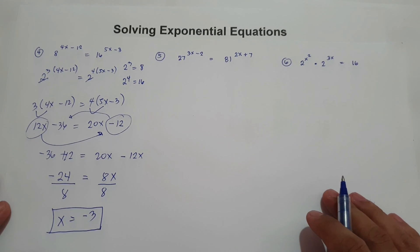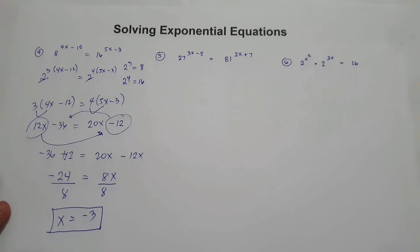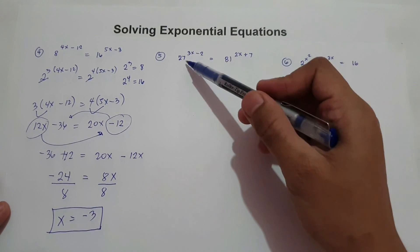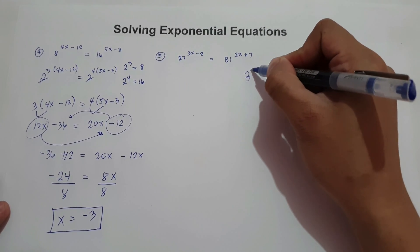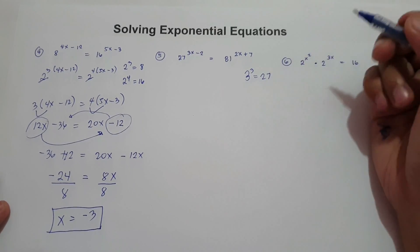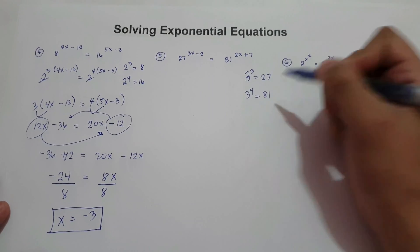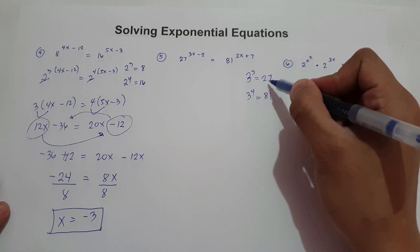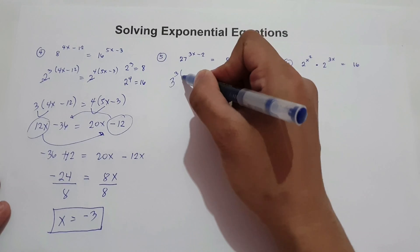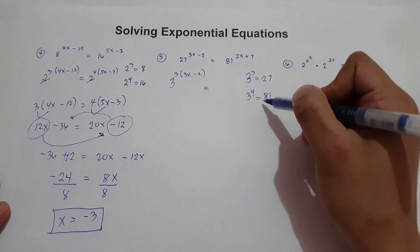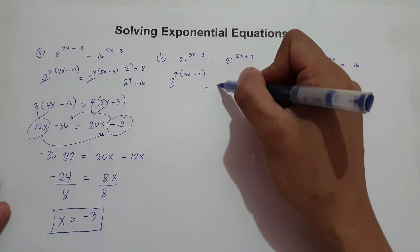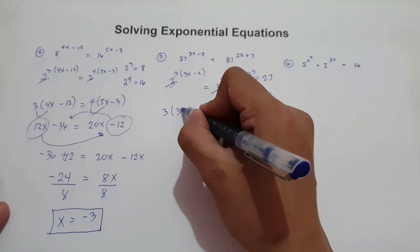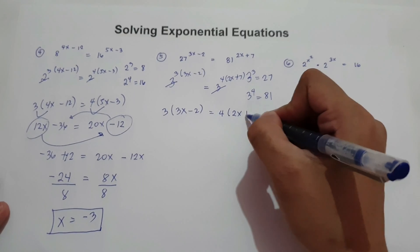What about number 5? Find the value of x. We have 27 raised to 3x minus 2 equals 81 raised to 2x plus 7. Let us change 27 and 81 with the same base. 3 raised to 3 is 27, and 3 raised to 4 is 81. So let us change 27 into 3 raised to 3 and 81 into 3 raised to 4. We have 3 raised to 3 times 3x minus 2 equals 3 raised to 4 times 2x plus 7. Cancel the base: 3 times 3x minus 2 equals 4 times 2x plus 7.